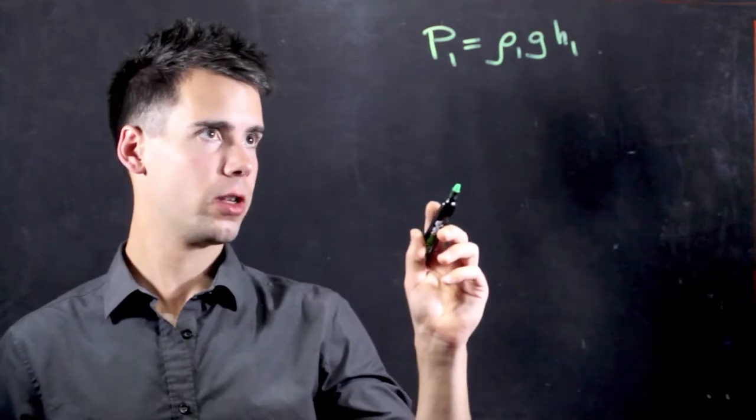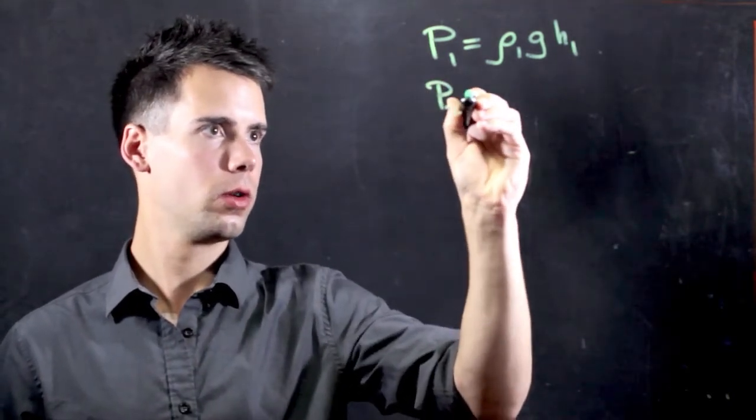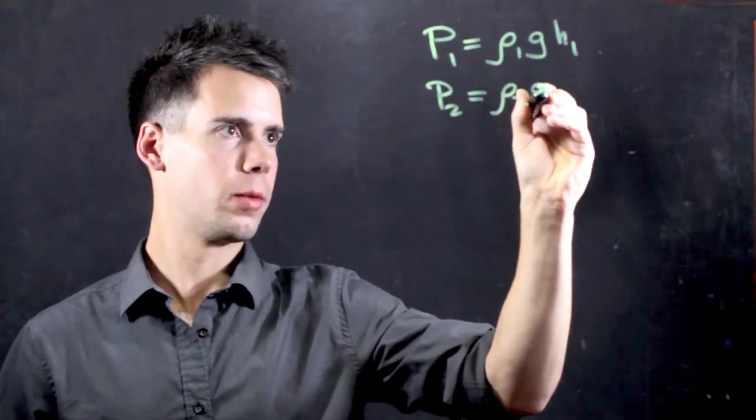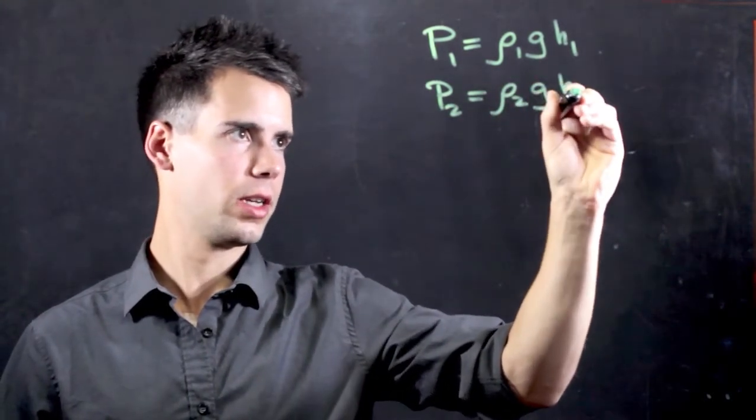And fortunately, we can also write the pressure 2, which relates to H2O, is Rho2 times G again, times H2.